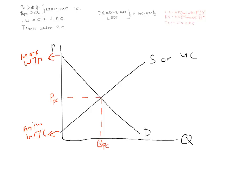Now we want to compare consumer surplus and producer surplus and introduce dead weight loss under monopoly. To do that, we need our marginal revenue curve. Setting marginal revenue equal to marginal cost gives us the monopoly quantity, which will be less than the competition quantity. We then find the monopoly price, and you can see monopoly price will be greater than competition price.